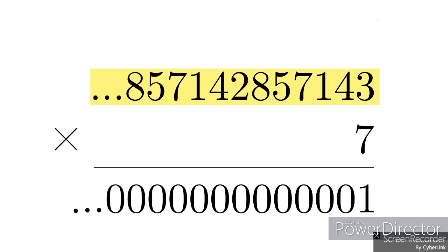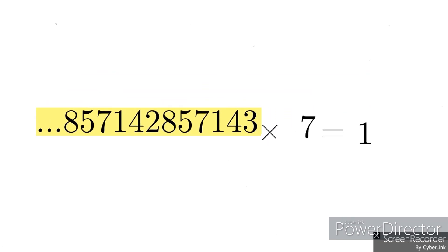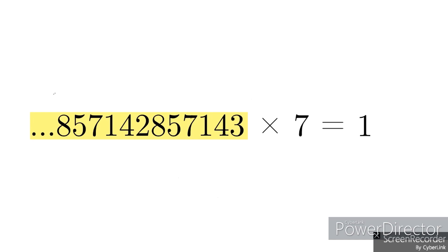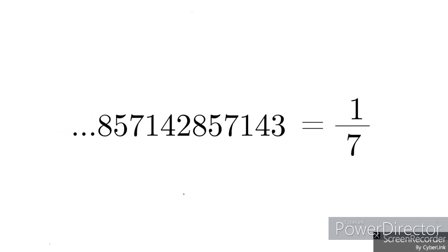So this number times 7 equals 1, which means this 10-adic number must be equal to 1/7.